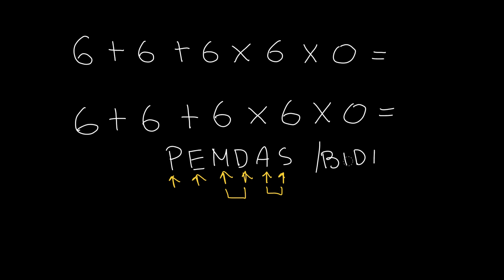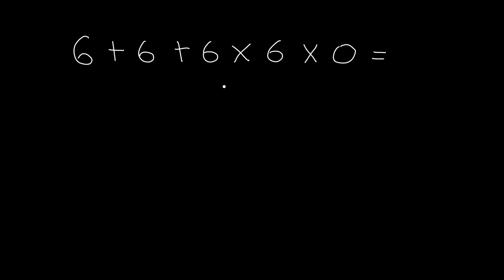So what is the correct way to solve this problem? The correct way to do this, you do multiplication before addition. So we have two multiplications here. So if we times 6 times 6, that's 36 times 0, that will be 0.